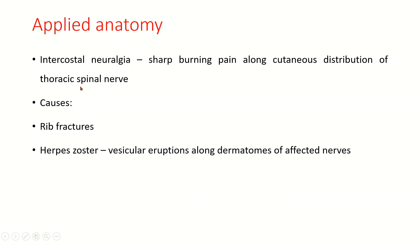Applied anatomy: Intercostal neuralgia is a sharp burning pain along the cutaneous distribution of the thoracic spinal nerve. Causes include rib fractures and herpes zoster, which is identified by vesicular eruptions along the dermatomes of the affected nerves.